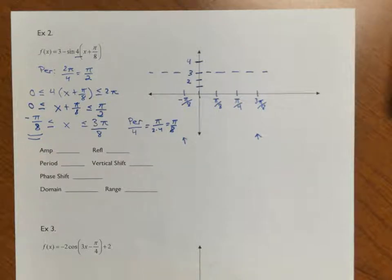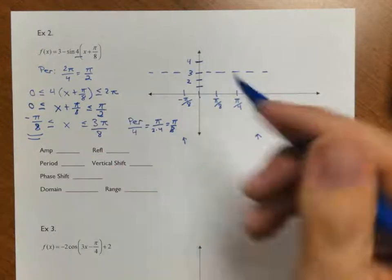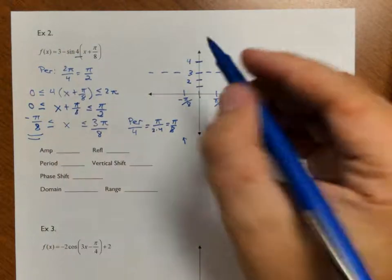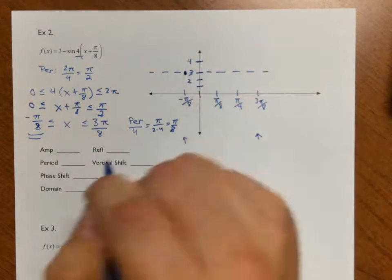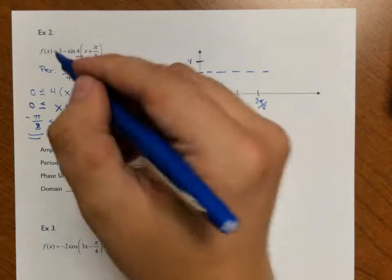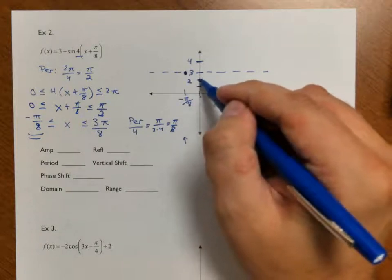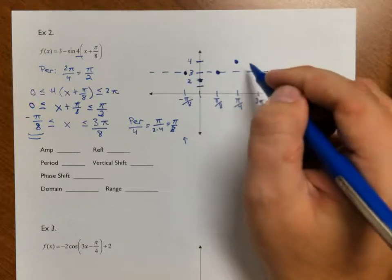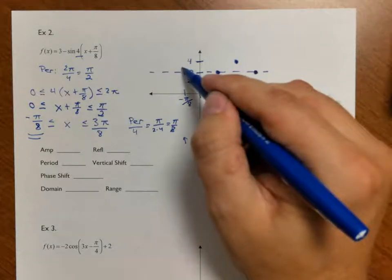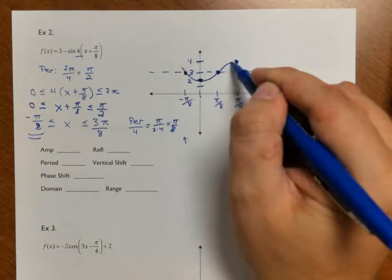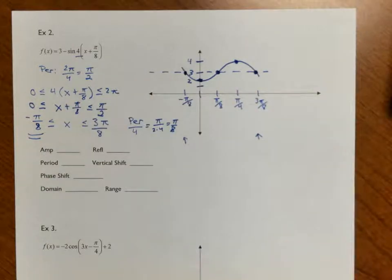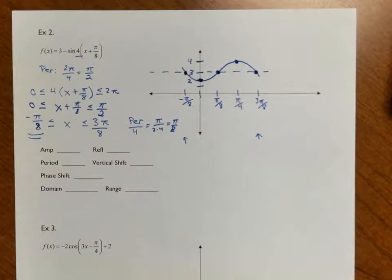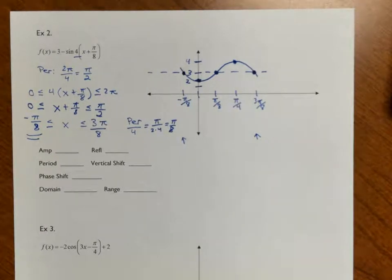Now I plot, going from −π/8 to 3π/8. Since I have a sine with a reflection, sine typically starts in the middle — but since there is a reflection, I start in the middle and go down. So I go: middle, low, back to middle, up high, then back to middle. As best I can, I put a nice smooth sine curve through those points. I could continue this out for more of the graph, but this is the essential part we need to plot.